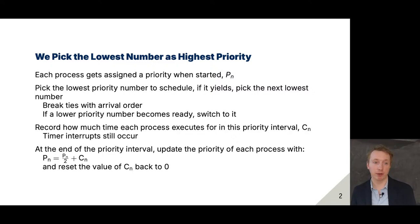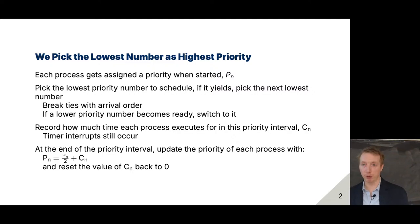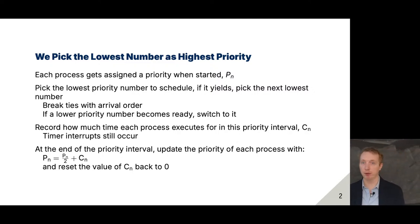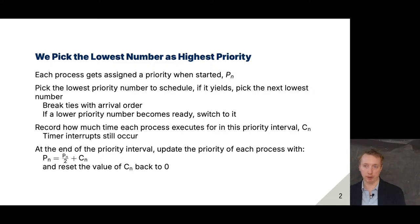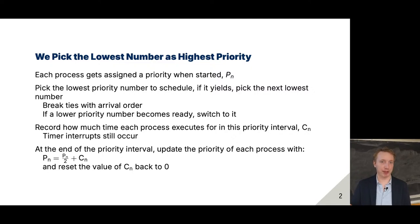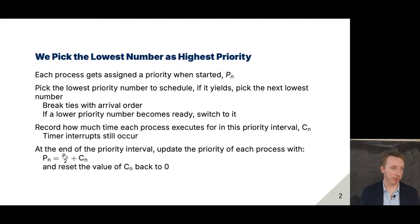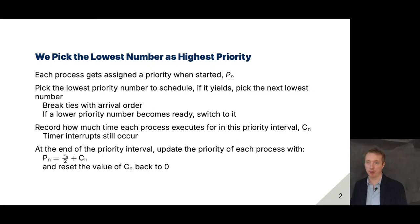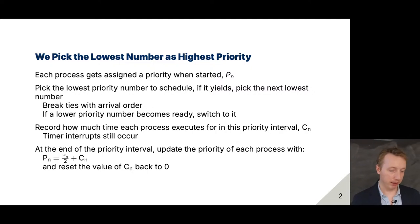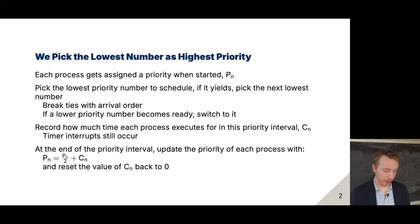The formal definition of preemption is that you can just take some resources away. In this case, preemption means these processes are using the CPU and I can stop them and take it away and manage it. Operating systems like controlling resources — preemptible and non-preemptible. Preemptible are things I can take away. Non-preemptible are things I can't take away, like if your process wants to use memory or files — I can't just take that away without causing gigantic issues.